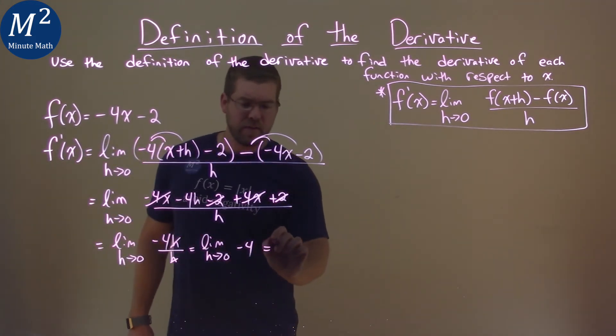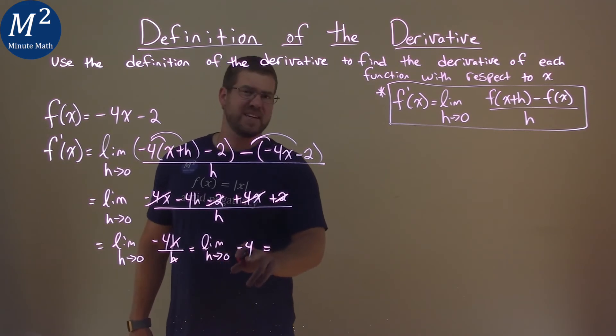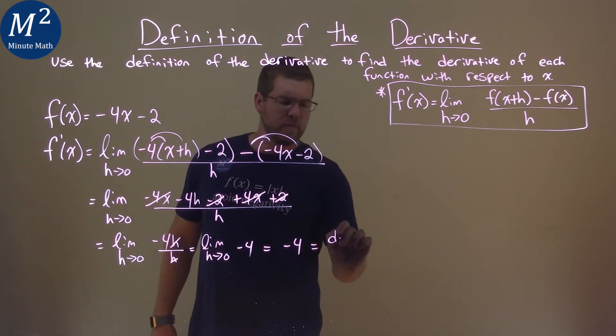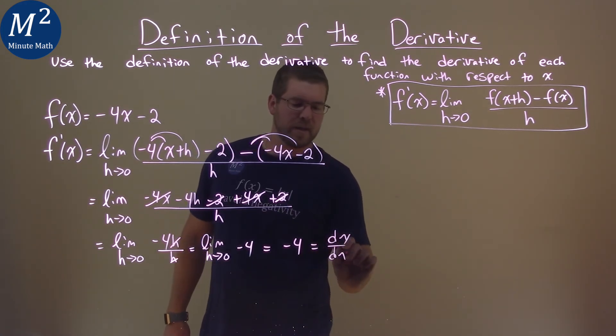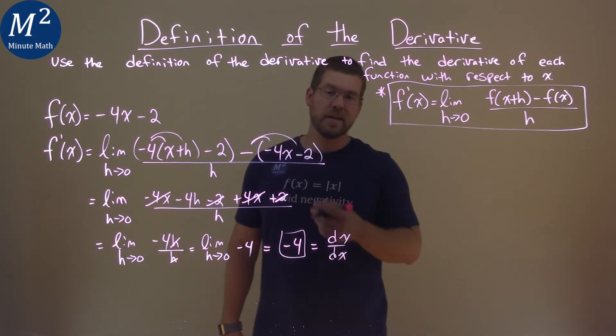We now can take this limit, and when we take the limit as h approaches 0, just the constant is the constant. So we have negative 4 here, and if you want to see it in another way, it's equal to dy/dx. And so our final answer here is just negative 4.